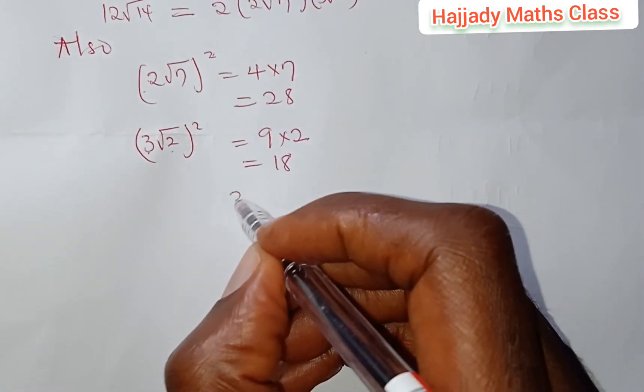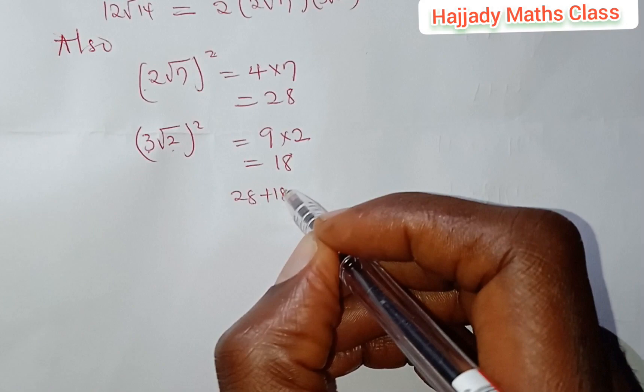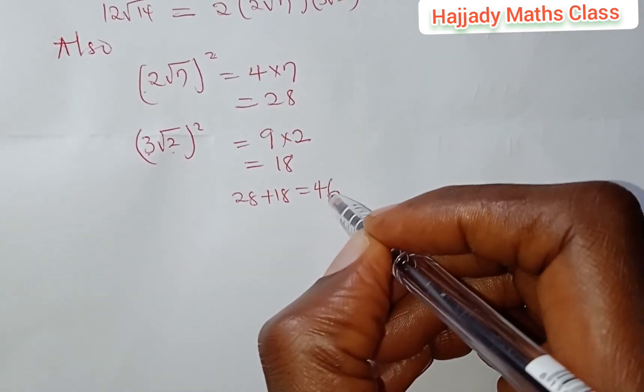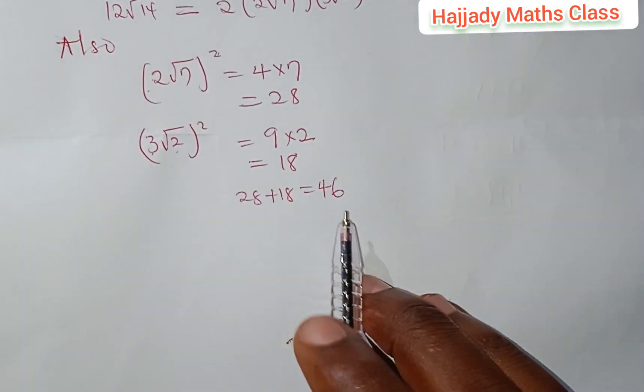And 28 + 18 gives what? 46. Wow. It gives what? 46.